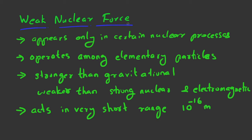Weak nuclear force appears only in certain nuclear processes like beta decay of a nucleus. It operates among elementary particles, particularly electrons and neutrons. It acts in a very short range of the order of 10 to the power of minus 16 meters.